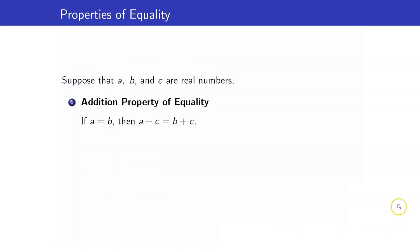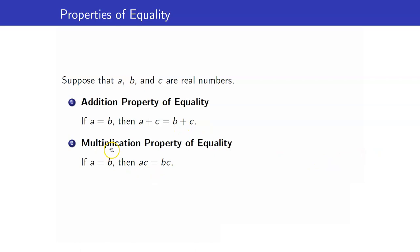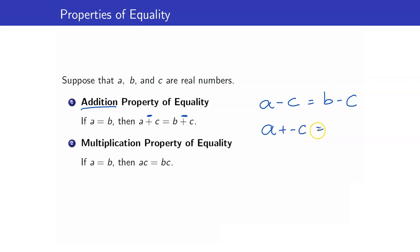Here are the two most frequent properties of equality used in solving linear equations. The first is the addition property of equality: if two numbers are equal and we add the same number on both sides, the resulting equation is still equal. We also have the multiplication property: if two numbers are equal and we multiply the same number on both sides, the result is still true. This also holds for subtraction, because subtraction is defined as adding the negative — so B minus C is the same as B plus negative C. We can also subtract the same number from both sides.